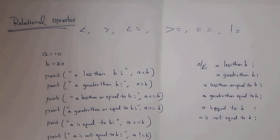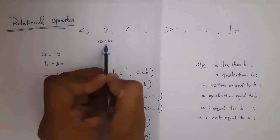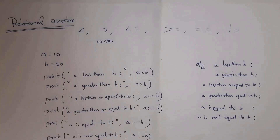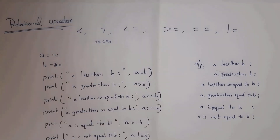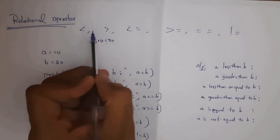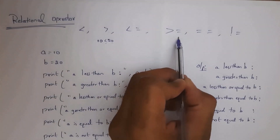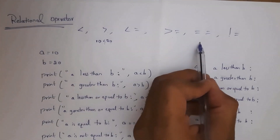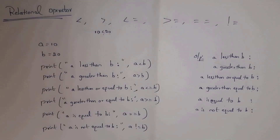The relational operator is used to identify the relation between two operands. For example, 10 < 20 — the less-than symbol is a relational operator. There are 6 relational operators: less than, greater than, less than or equal to, greater than or equal to, equal to, and not equal to.